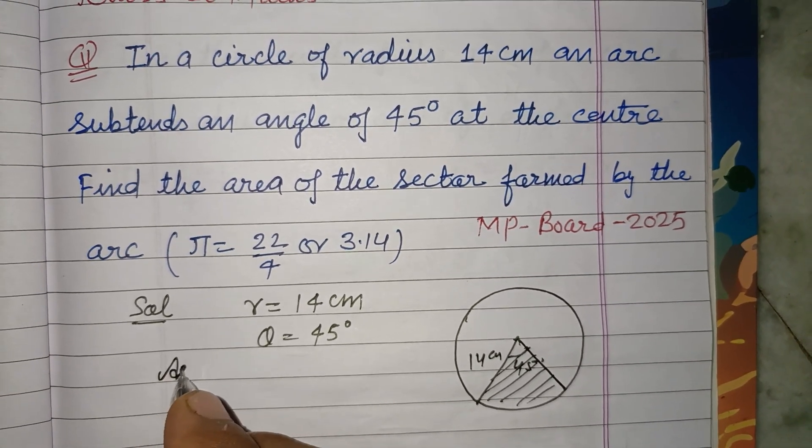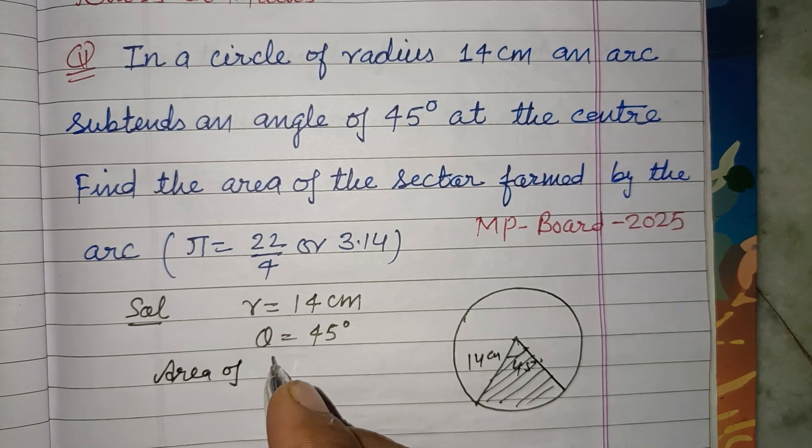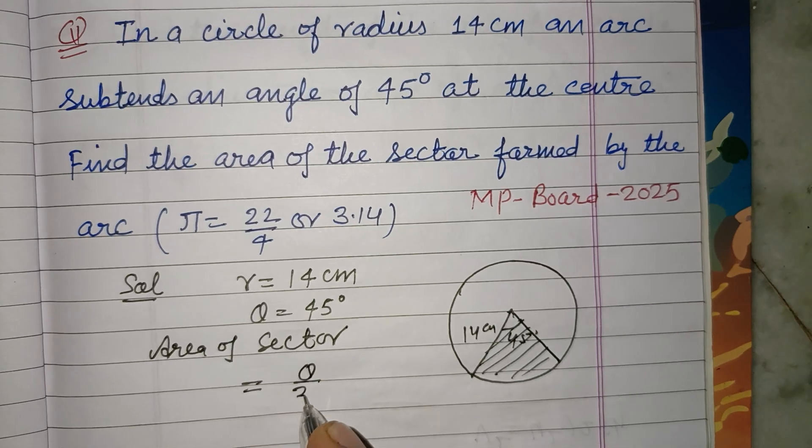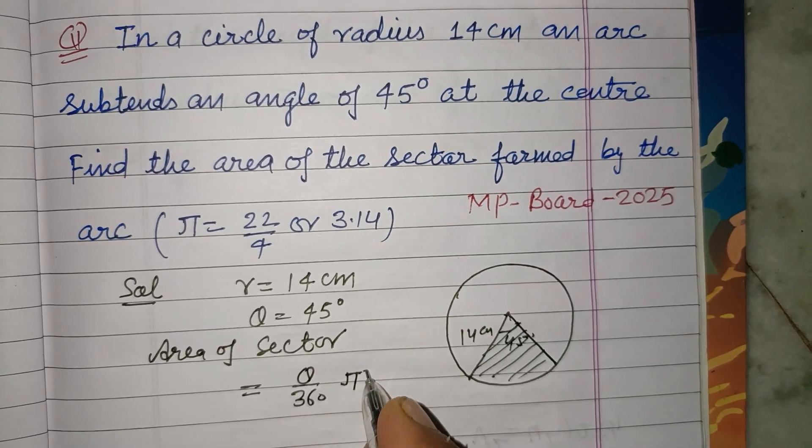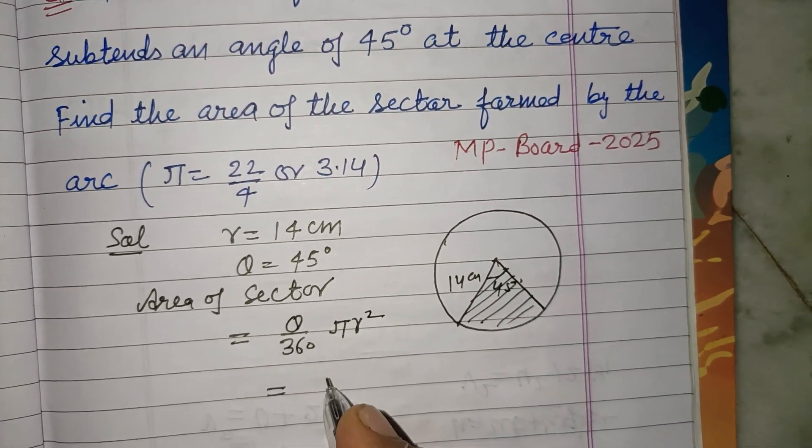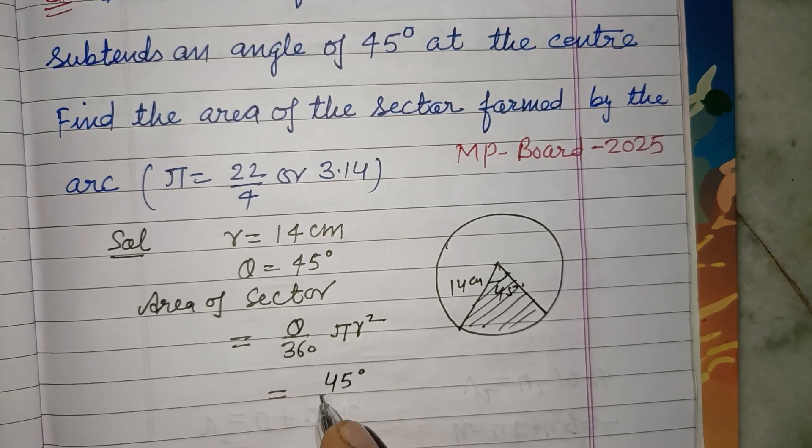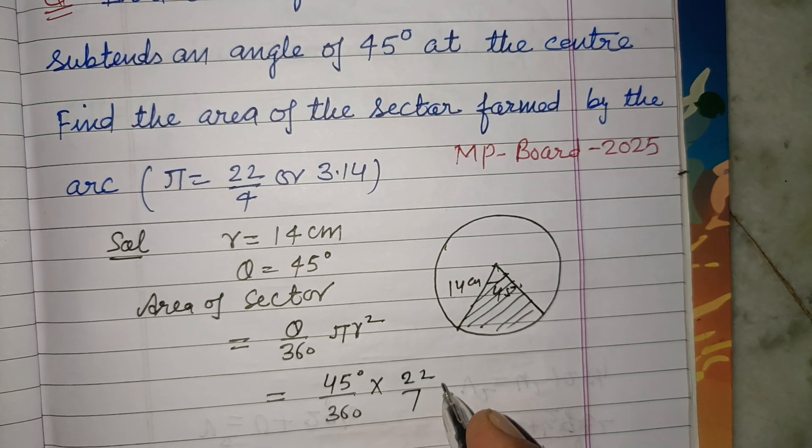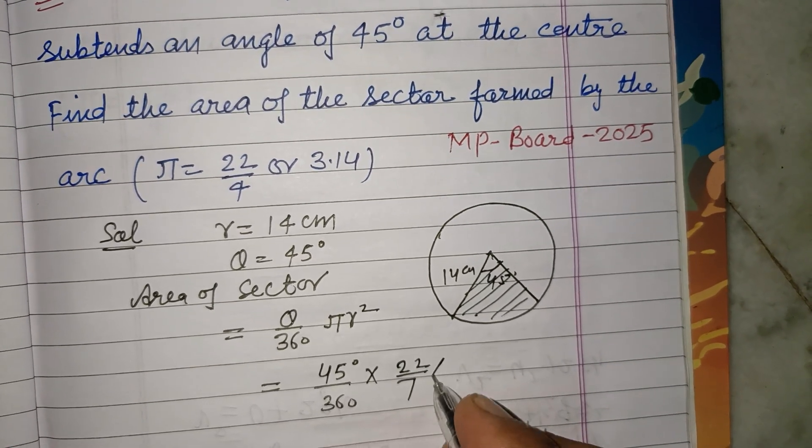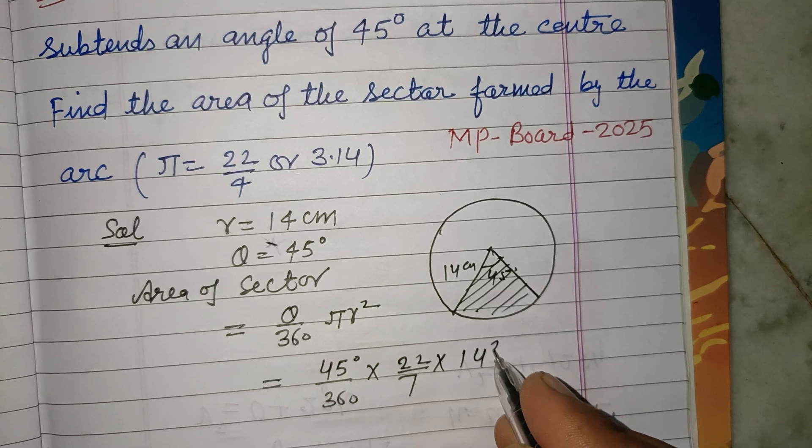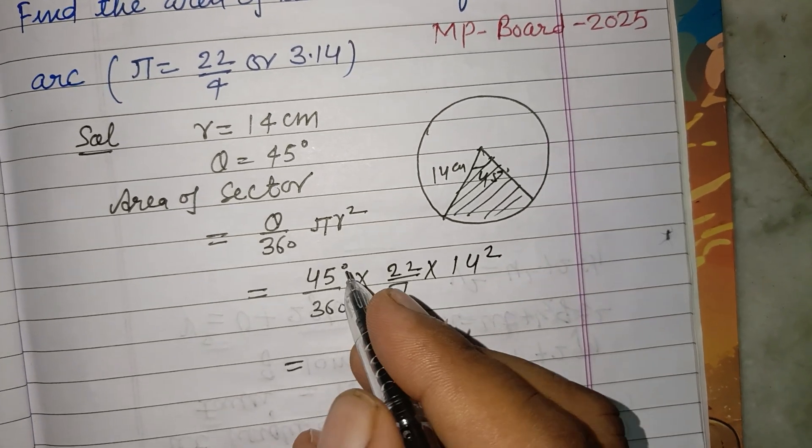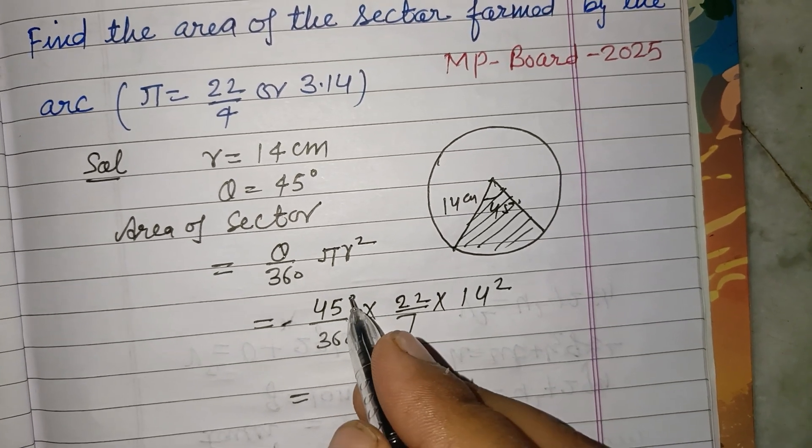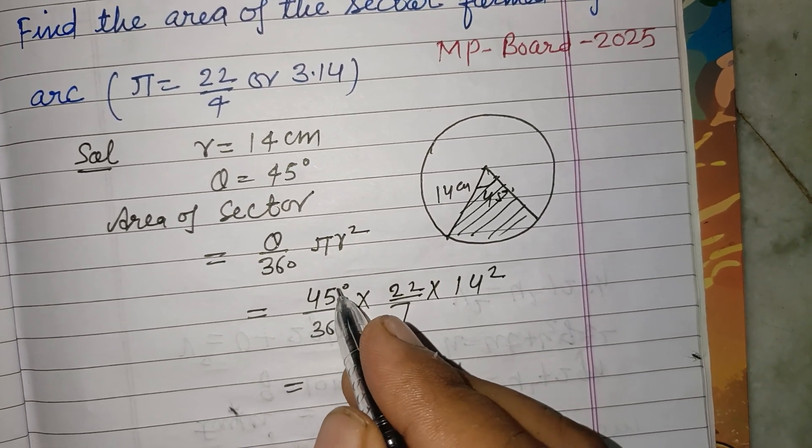So area of sector equals theta upon 360 into pi r squared. Theta is 45 upon 360 into pi, 22 upon 7, into r squared is 14 squared. So this is dividing this by 5.